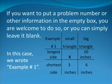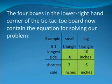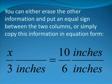On your screen, you will note that we wrote example 1 in the upper left-hand corner of the box. Filling in the numbers in the blanks leads to the following. You can either erase the other information and put an equal sign between the two columns, or simply copy this information in equation form. Note the lower four squares in the box on the right-hand side. Your equation form reads like this: X over 3 inches is equal to 10 inches divided by 6 inches for this particular problem.